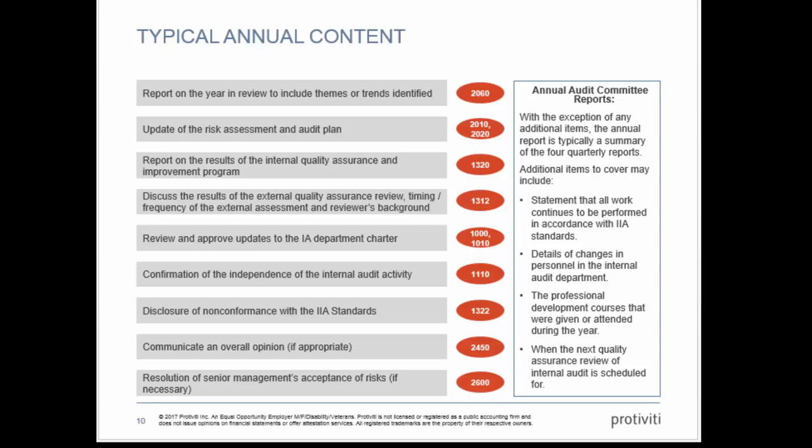Discuss the results of the external quality assurance review and what came out of it. Review and approve updates to the department charter annually, making sure it's still consistent and relevant to the business. Report on the independence of the internal audit activity and disclosure of any non-conformance with the standards — to be in conformance, you have to disclose when you're not. Offering an overall opinion on the control environment is guidance from the IIA and not required, but if you do, there are standards around how to do that. If management chooses to accept risk, that's something you're supposed to communicate to the board.